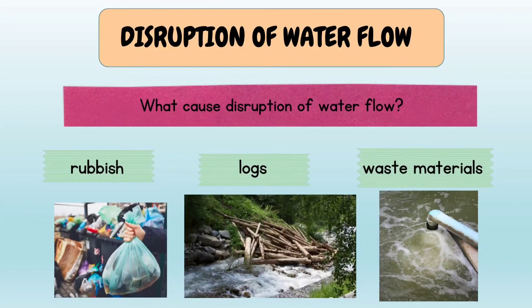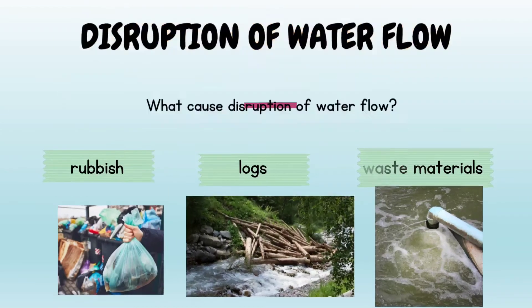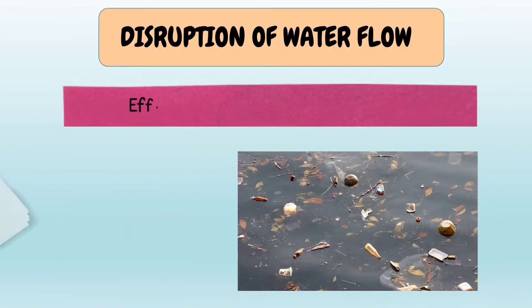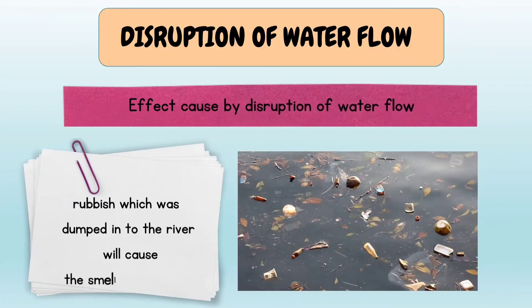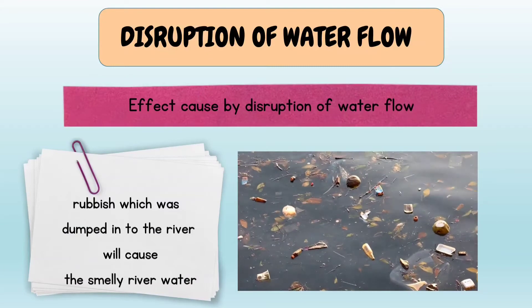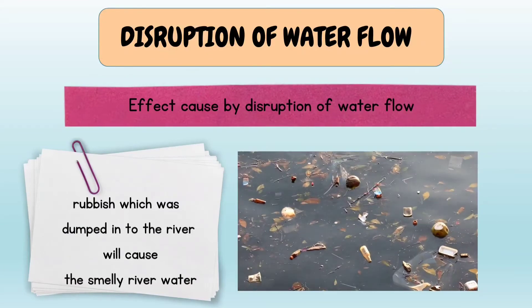What causes disruptions of water flow? Rubbish which is dumped into the river will cause the river water to become smelly.